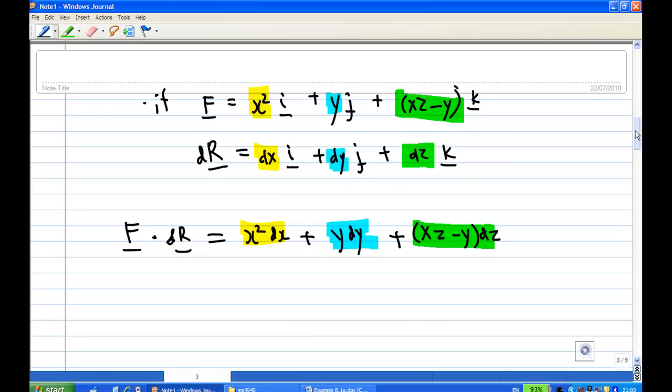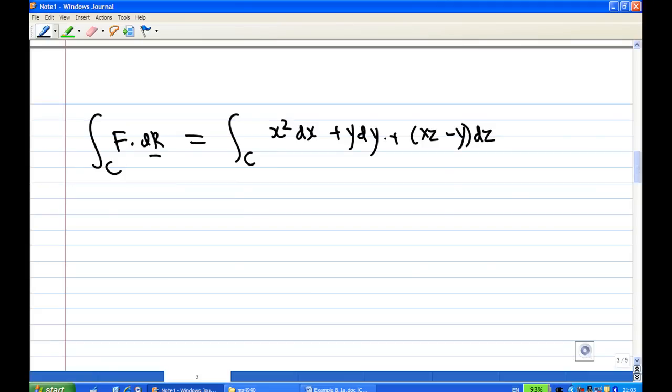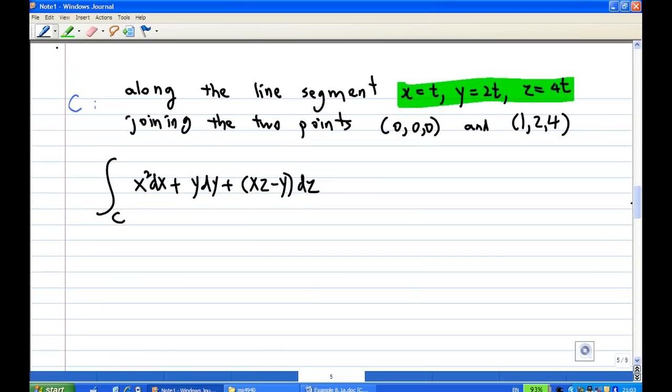And the integration we have is F dot dr over the contour. So this is the integration over the contour. Now, what is the contour again? The contour is a straight line joining (0,0,0) to (1,2,4). So in this case, we need to convert everything to t now.